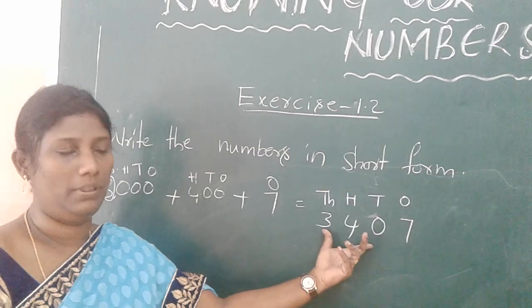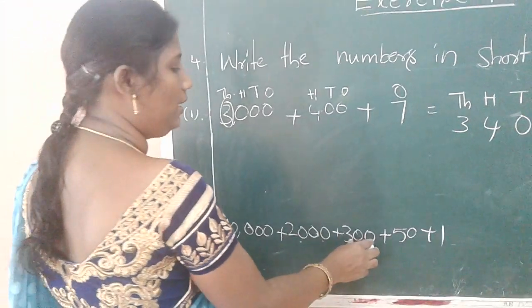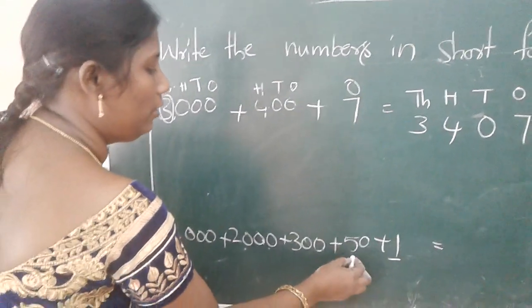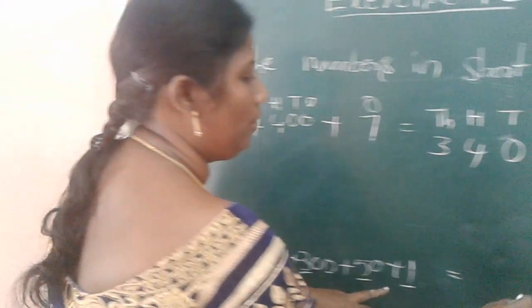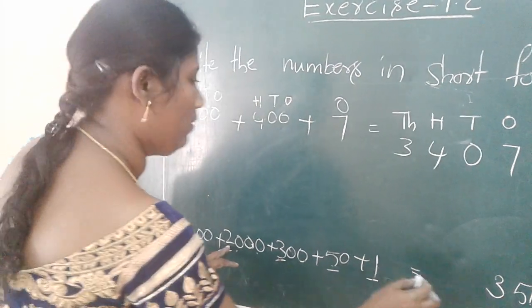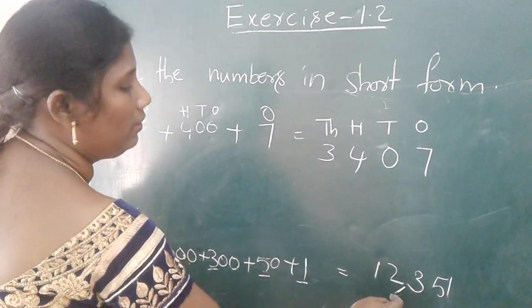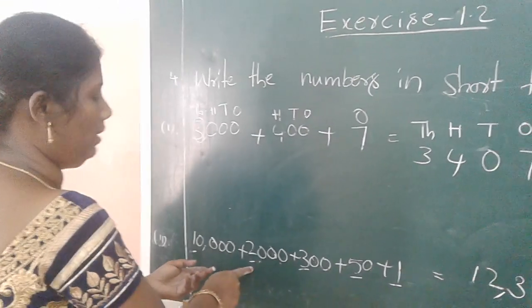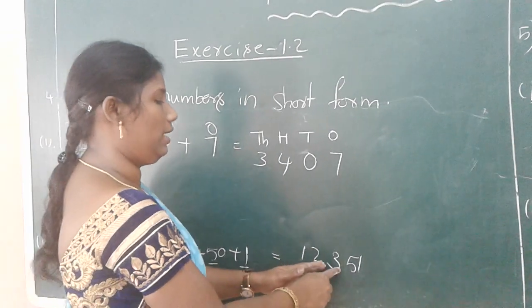Take another example: 10,000 plus 2,000 plus 300 plus 50 plus 1. Place values: ones place is 1, tens place is 5, hundreds place is 3, thousands place is 2, ten-thousands place is 1. So the short form is 12,351. That is, 10,000 + 2,000 + 300 + 50 + 1 = 12,351.